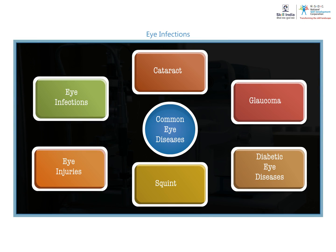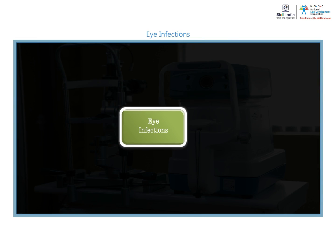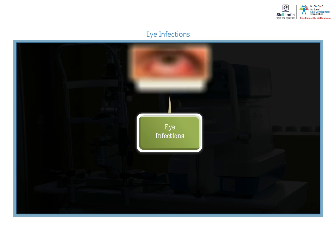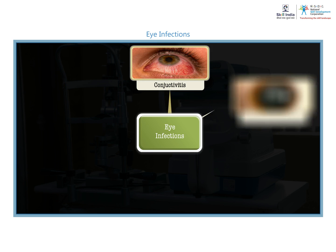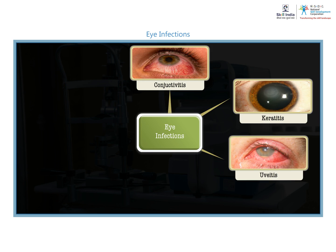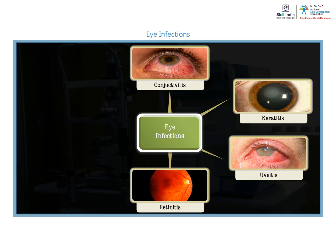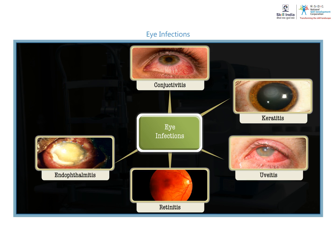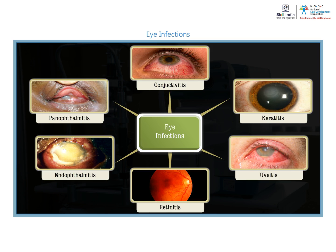Let us first look at the most common eye diseases — eye infections. Infections occur when disease-causing organisms enter the body and affect any part of the eye. Let us learn about some common types of eye infections.